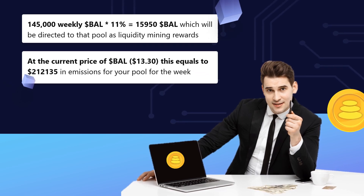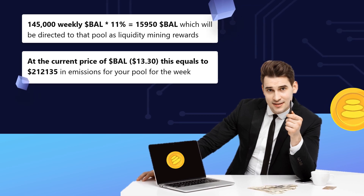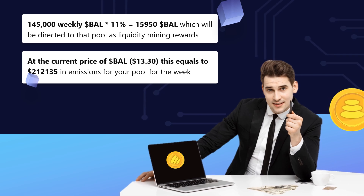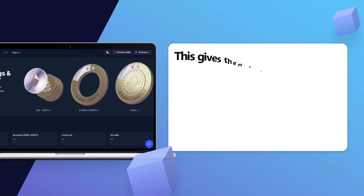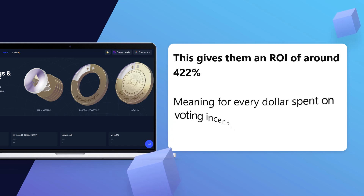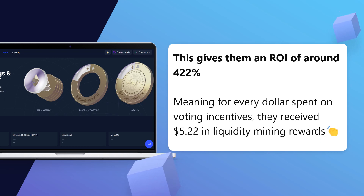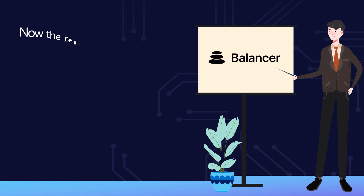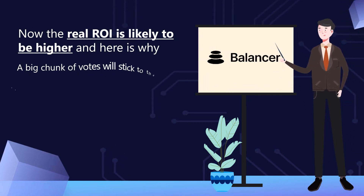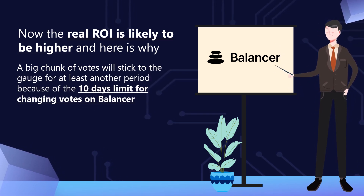At the current price of BAL at $13.30, the $145,000 weekly BAL emissions times 11% equals $15,950 BAL directed to that pool as liquidity mining rewards, equating to $212,135 in emissions for the pool for the week. This gives them an ROI of around 422%, meaning for every dollar spent on voting incentives, they received $5.22 in liquidity mining rewards. The real ROI is likely to be even higher, since a big chunk of votes will stick to the gauge for at least another period because of the 10-day limit for changing votes on Balancer.